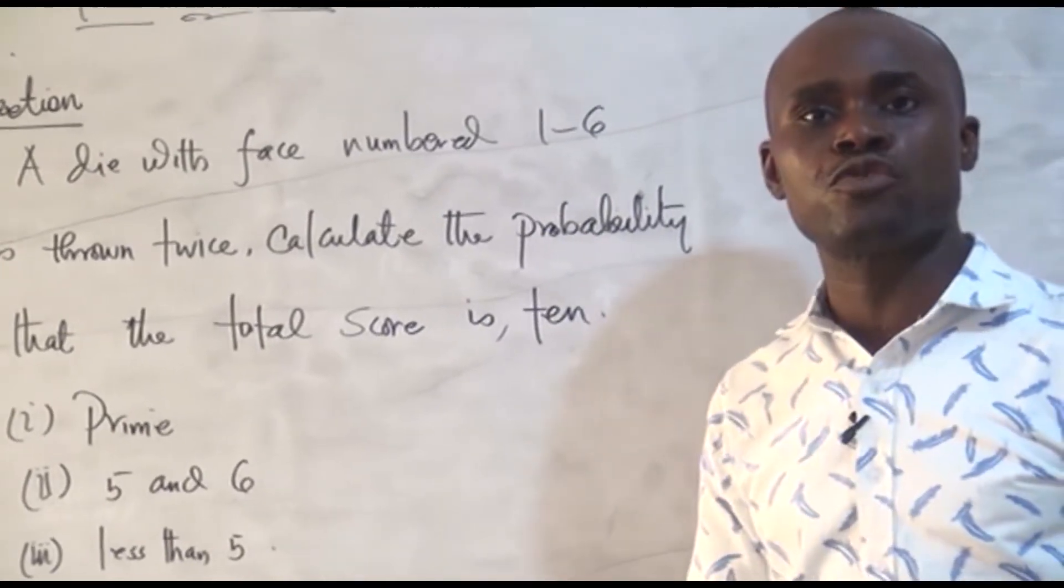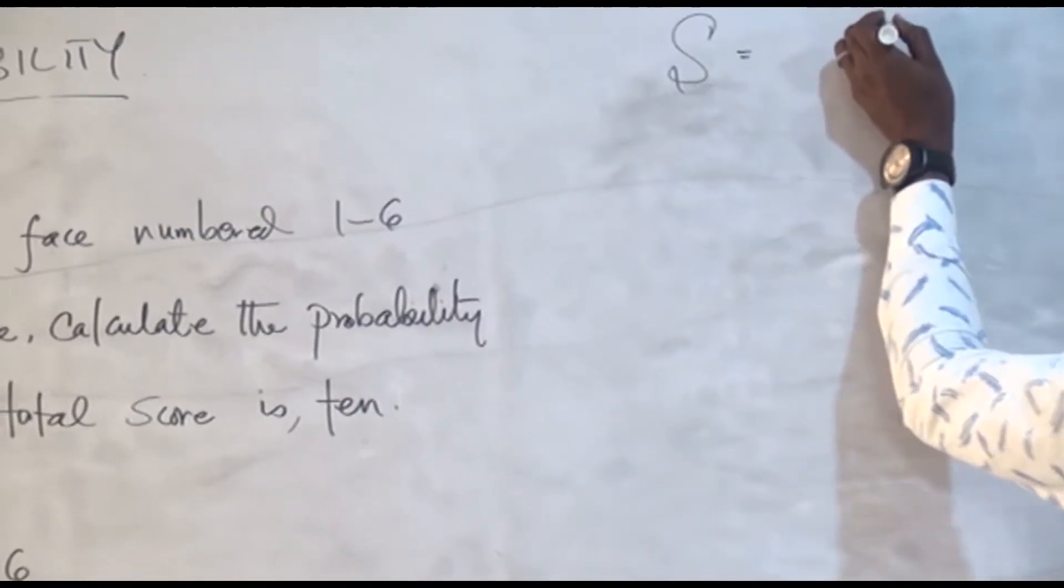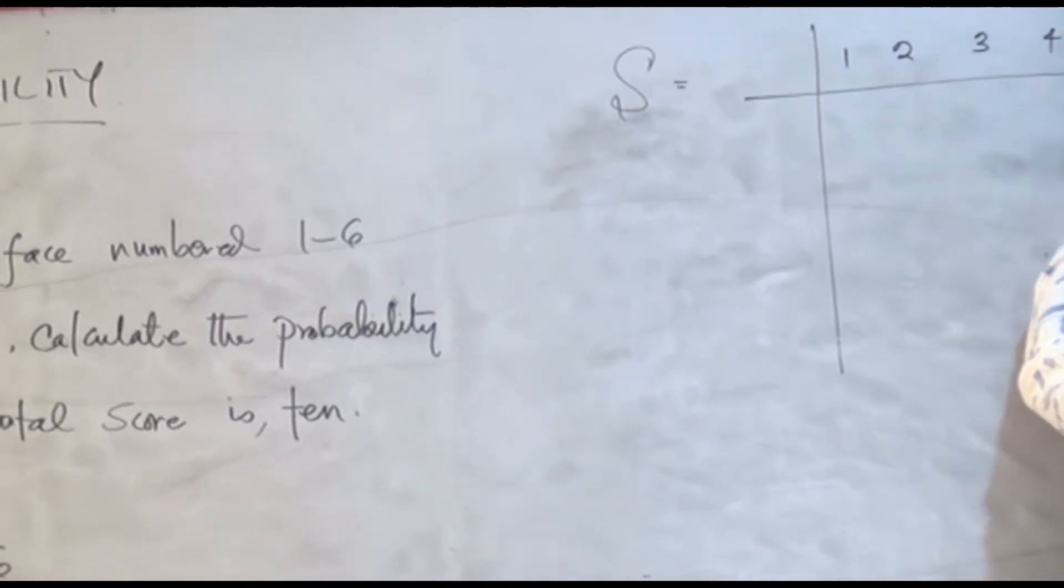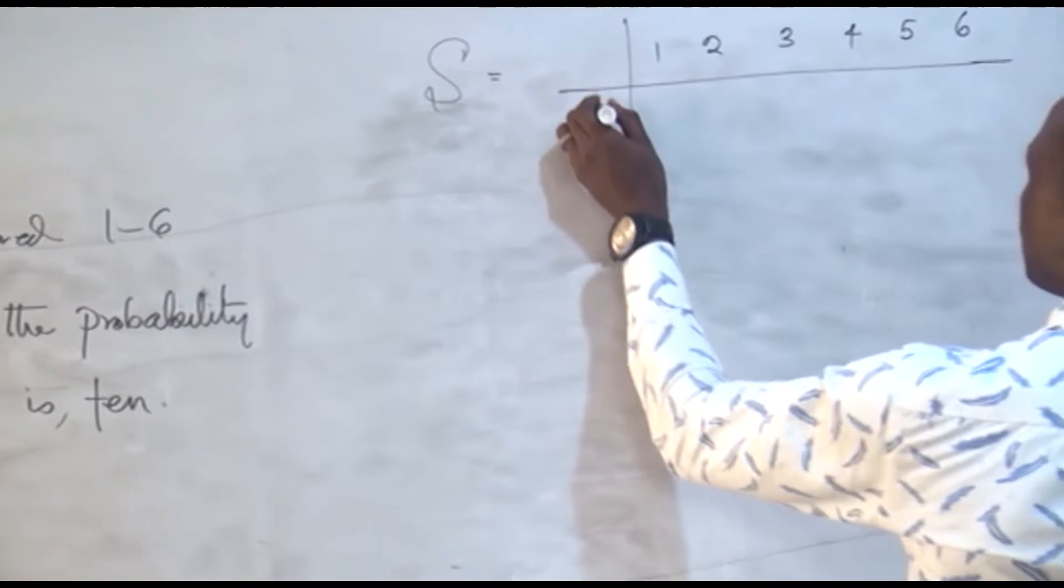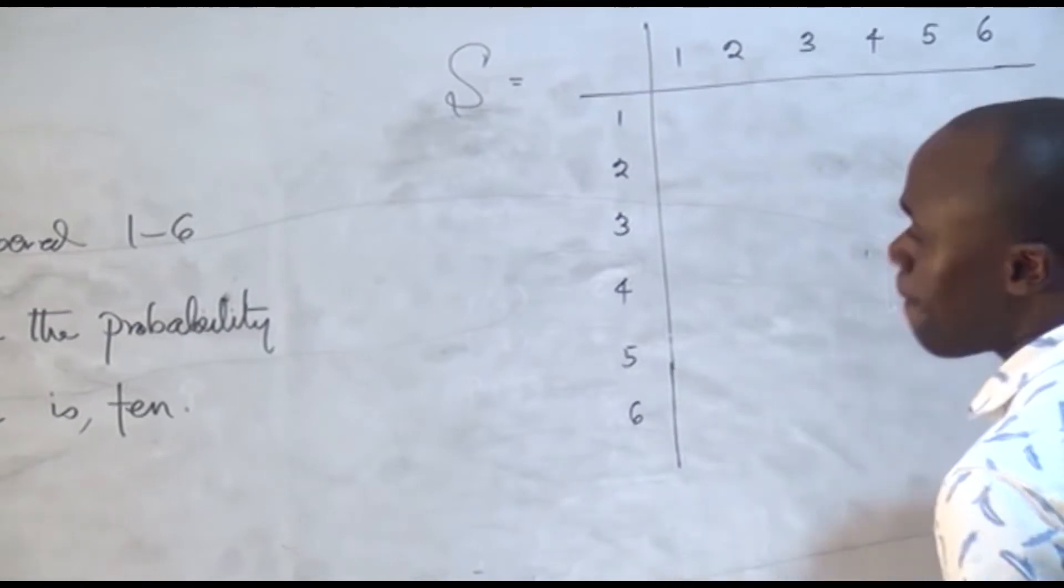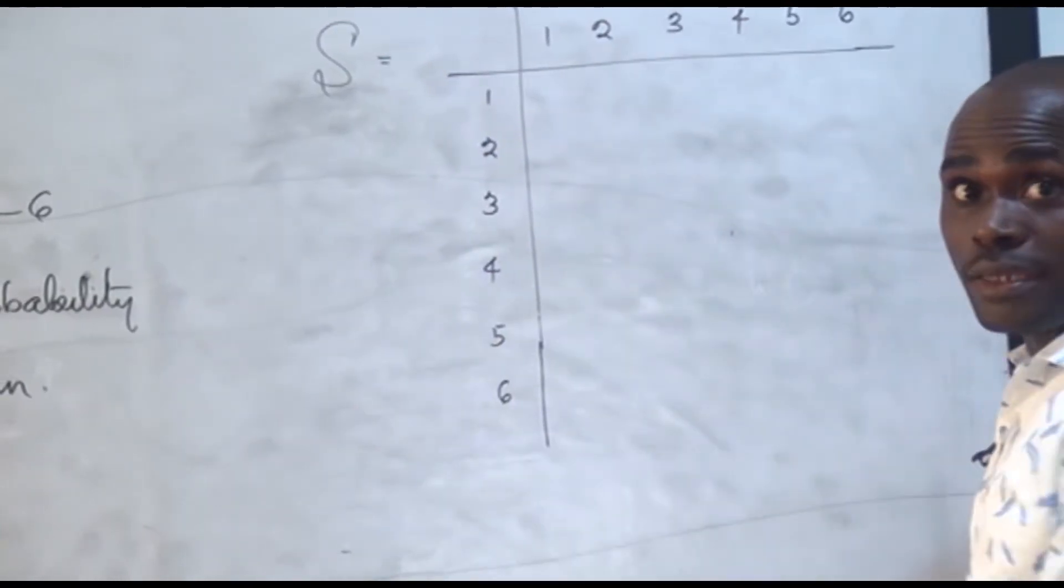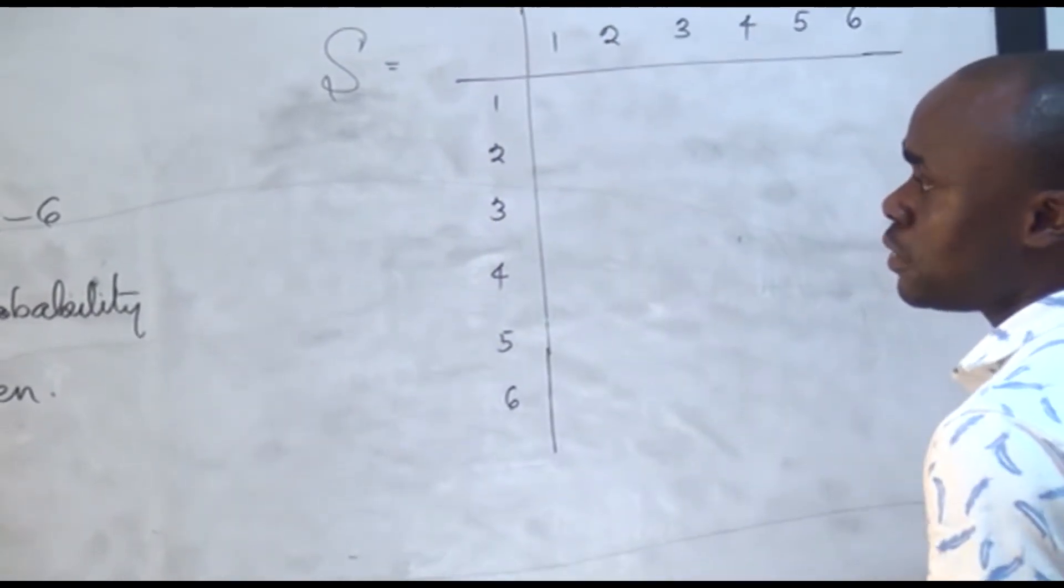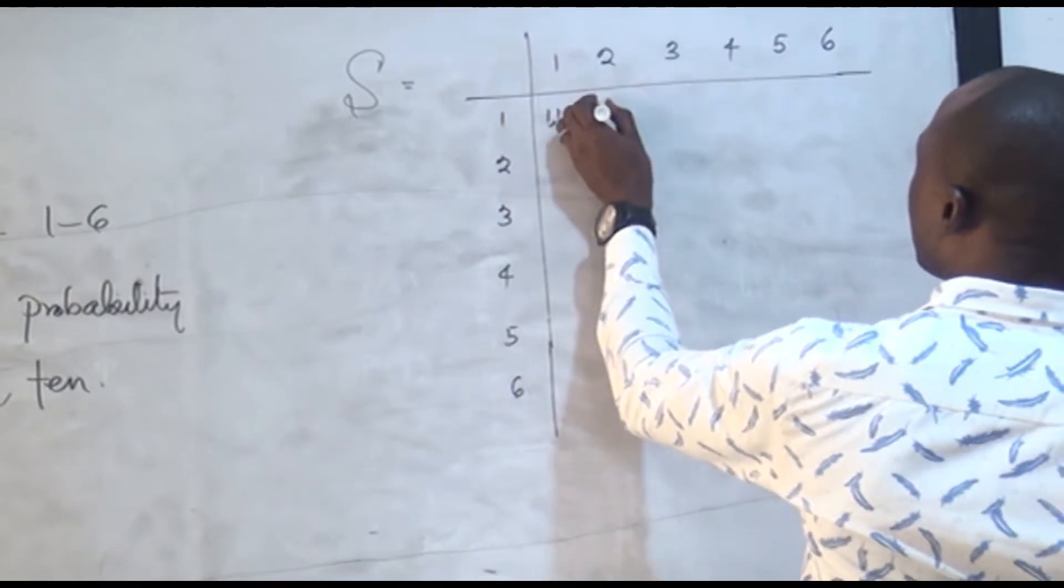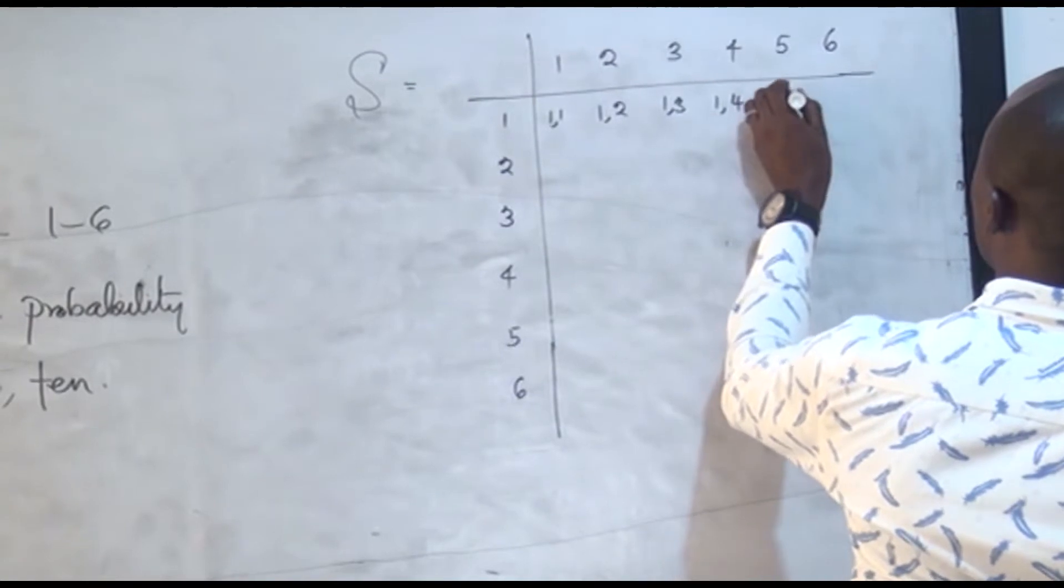So since the die was thrown twice, the sample space is going to be of this form. This is the first die: 1, 2, 3, 4, 5, and 6. And the other one is 1, 2, 3, 4, 5, and 6. So this is the first die, this is the second die. The combination of this is that you can have 1,1, you can have 1,2, you can have 1,3, 1,4, 1,5, 1,6.